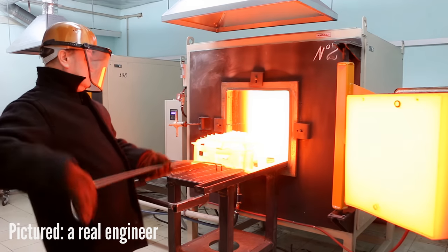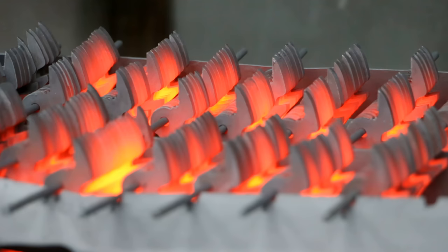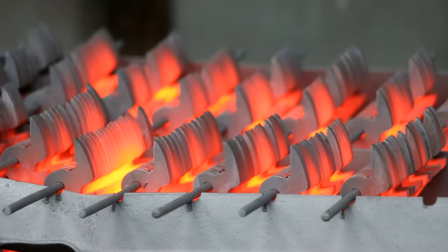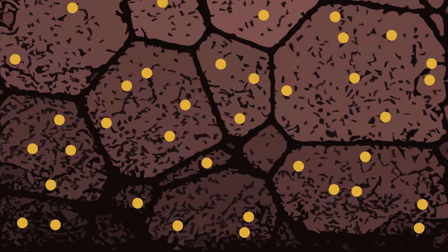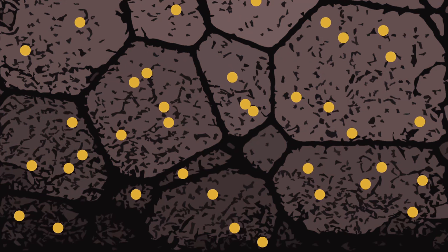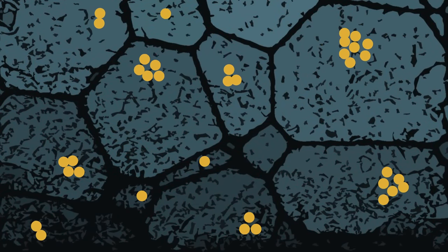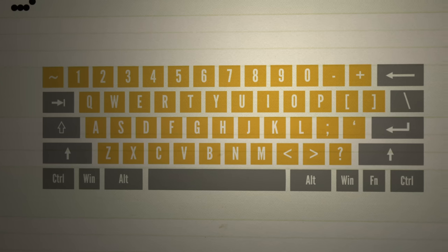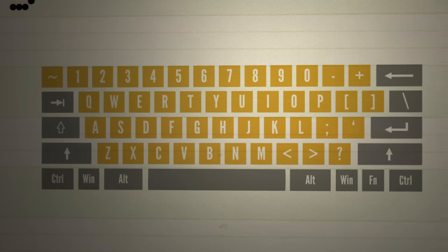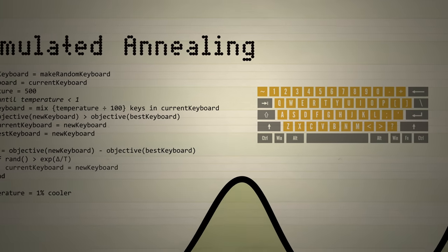In the world of material science, annealing is when we heat up a metal and then slowly cool it back down, which allows the atoms to gradually rearrange themselves in a more optimal, low-stress configuration. We can apply this same concept to keyboards, to slowly rearrange their keys and relieve the stress from our fingers.